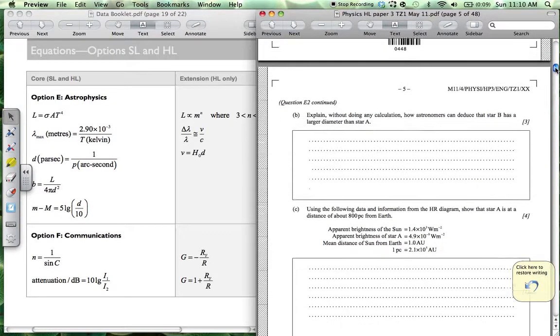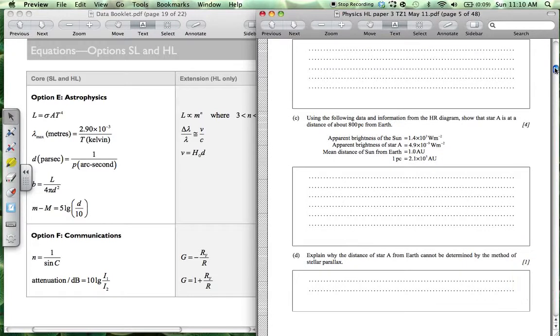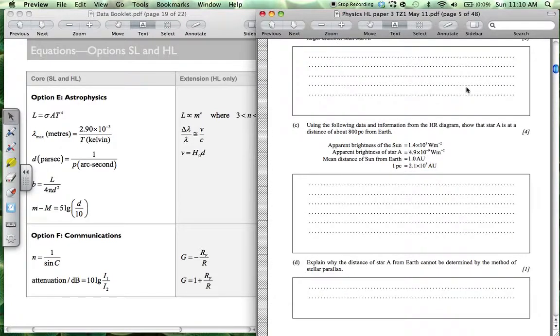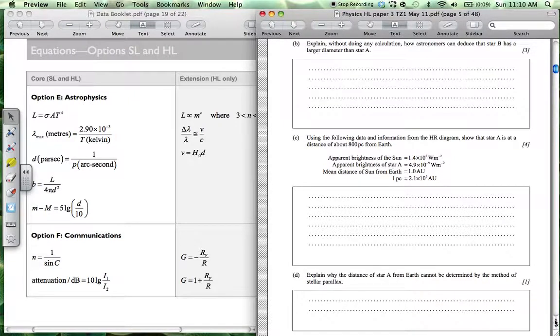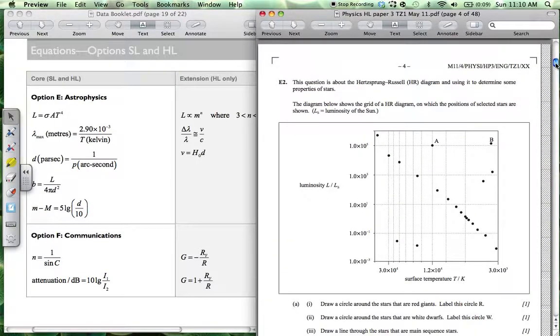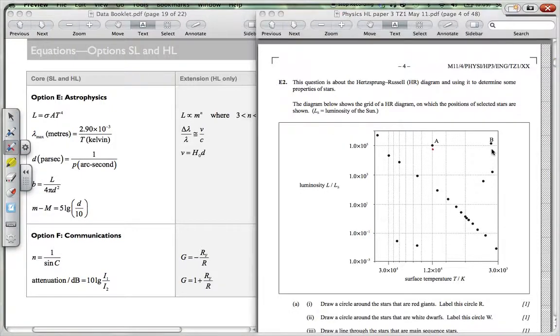Going on to the next question here. So it says, explain without doing any more calculations, how astronomers can deduce that star B has a larger diameter than star A. So let's just go back to our Hertzsprung-Russell diagram here. So we've got star A, star A is this one over here, star A and star B. So star B, we are saying has got a larger diameter. It's actually a bigger star than star A. Why could we say that without doing any calculations?